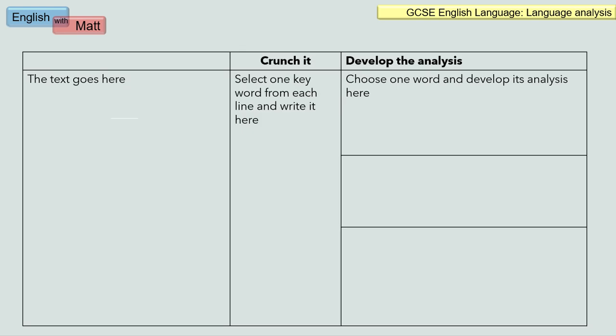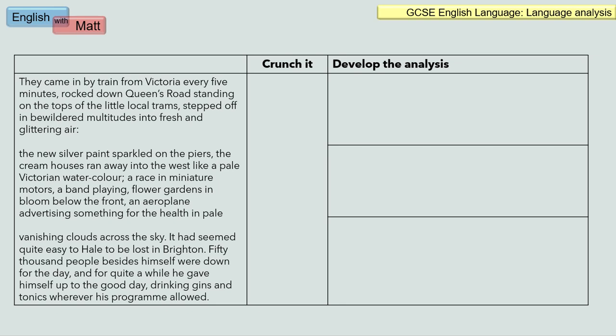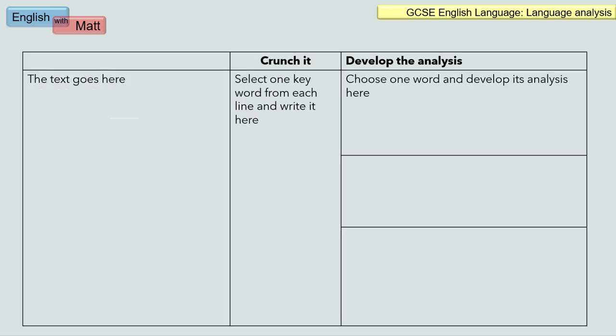Here is the Crunchit grid. This is what I give out to students in my class. The text goes in the left-hand column. In the middle column, as you can see, are the words that students select from each line of the extract. And the furthest right-hand column is a word or words that they take further to develop the analysis even more. That is practising the skill of taking the extract, zooming in, and being able to discuss specific words because you regard them as important in terms of answering the question.